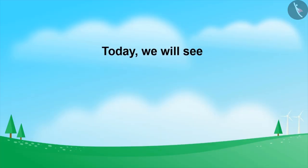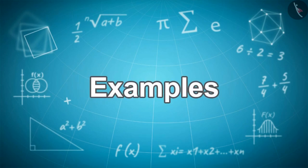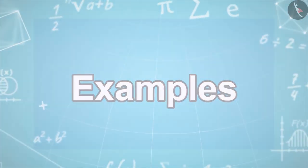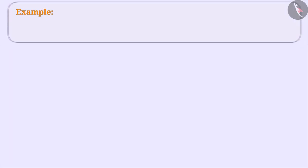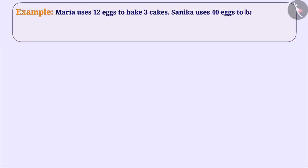Today, we will see some examples of proportion. Maria uses 12 eggs to bake 3 cakes. Sanika uses 40 eggs to bake 10 cakes.